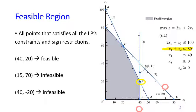Another point is (40, -20). This is obviously an infeasible point because it does not satisfy the second sign restriction — x2 is negative 20. Therefore, it is an infeasible point.